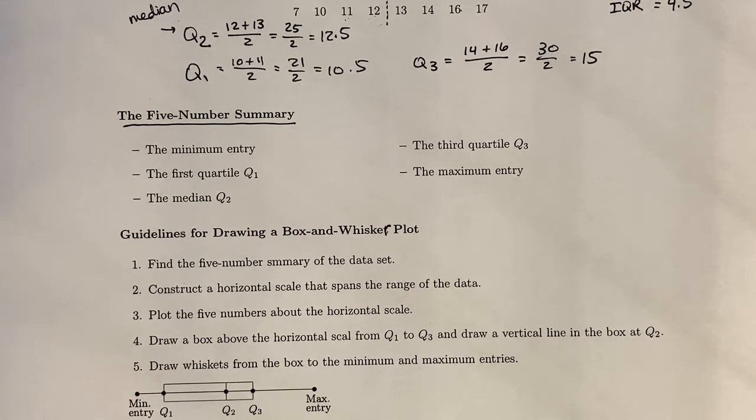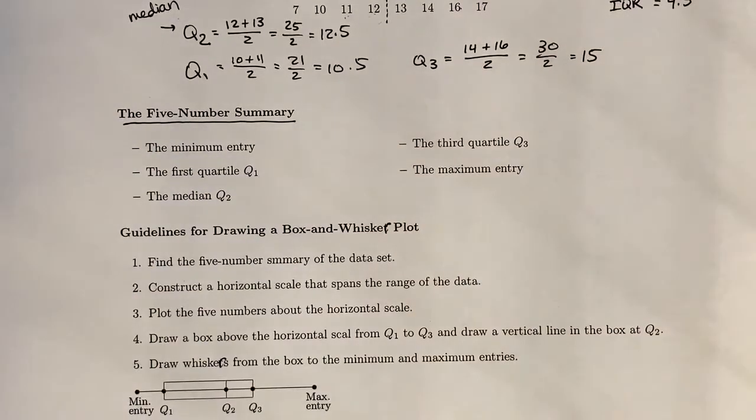Then we plot the five numbers about the horizontal scale. I like to plot them slightly above the axis so that when we go ahead and draw in the box from the box-and-whisker plot, we can really see the box and the whiskers themselves. Once you have the five numbers plotted, you draw a box from Q₁, the first quartile, to Q₃, the third quartile. Then inside that box you draw a vertical line at where Q₂ is. From there you draw these things called whiskers from the box on the left-hand side to the minimum entry and the box on the right-hand side to the maximum entry.